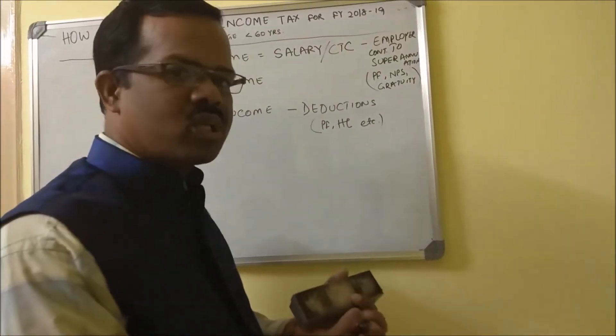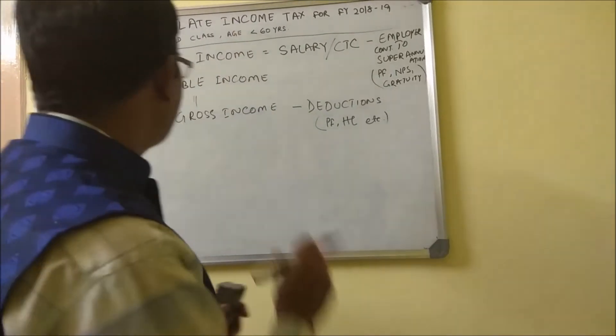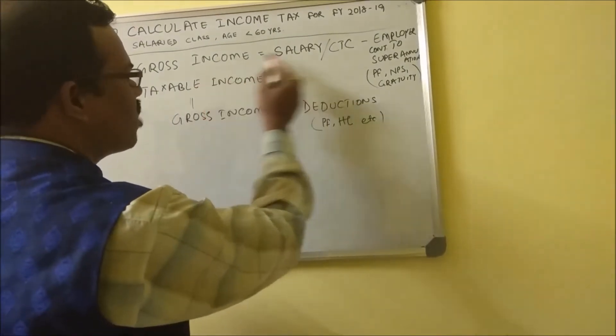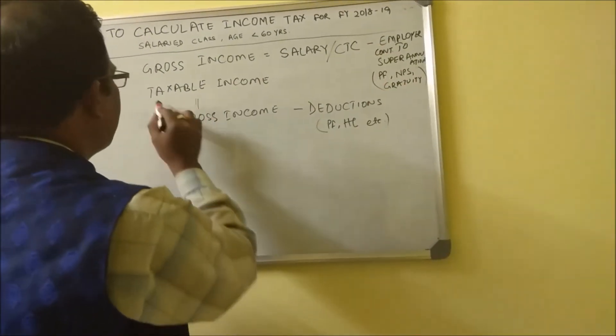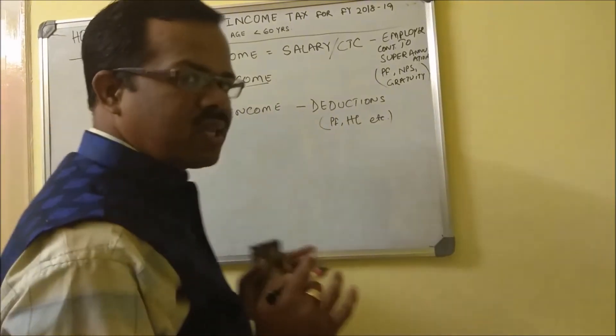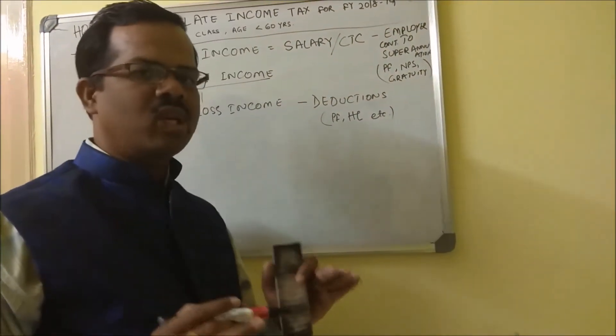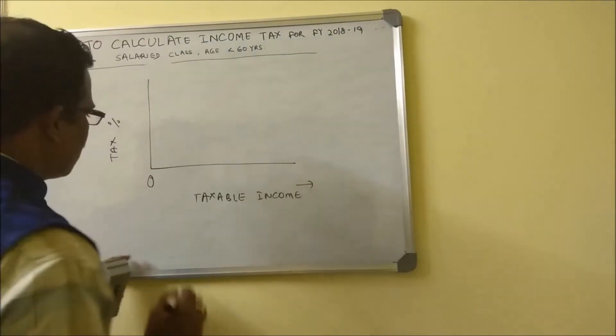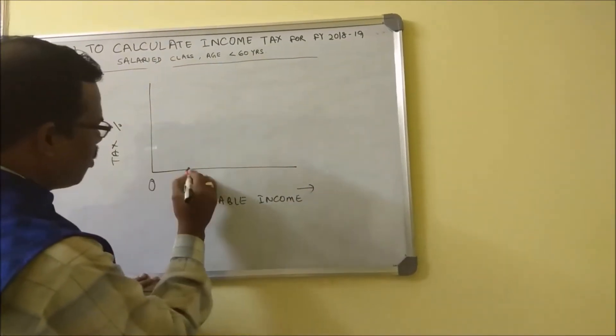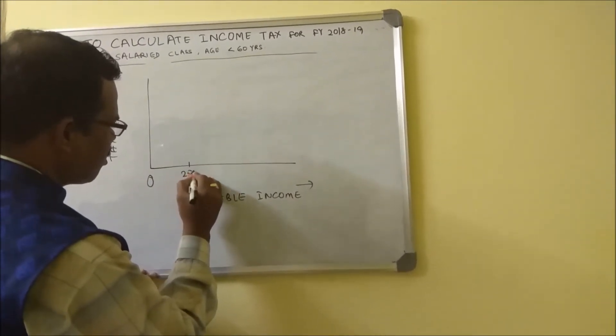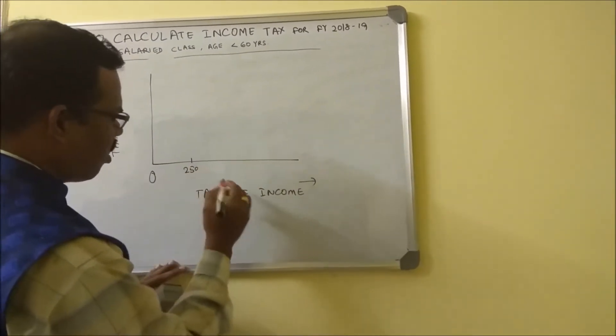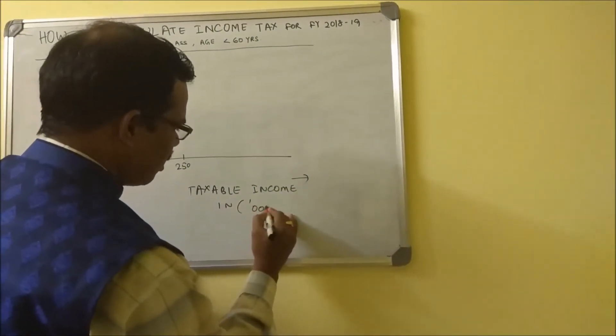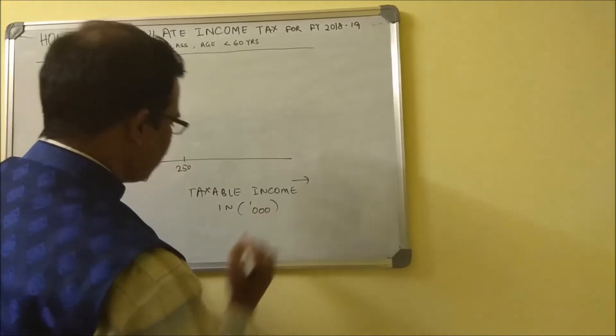We will focus on our tax calculation now. Once you have the deductions, you subtract from your gross income which you have arrived like this, and then you find out the taxable income. Once you arrive at the taxable income, then the tiered structure of taxes will come into play. First, up to 250,000 - all are in thousands so we don't have to write unnecessary zeros - till 250,000 we do not have any tax, that means zero percent.